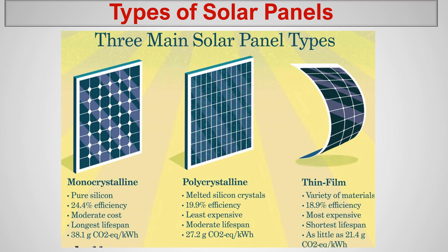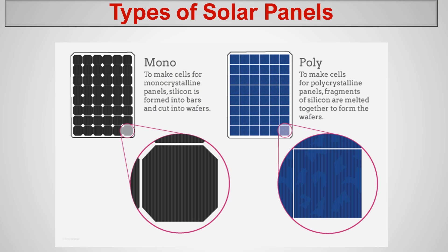Nowadays we are mainly using monocrystalline, which is the advanced type. Looking deeper at mono and poly — polycrystalline was used about 10 years ago; now we are using monocrystalline. You can easily identify them visually: monocrystalline looks black in color. To make cells for monocrystalline panels, silicon is formed into bars and cut into wafers. For polycrystalline, fragments of silicon are melted together to form wafers — that is the older technology. Monocrystalline is the newer, more efficient technology with a longer lifespan.